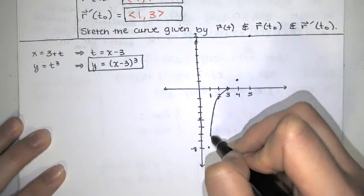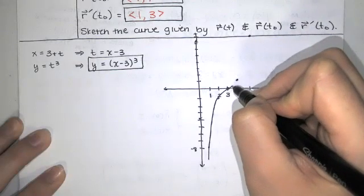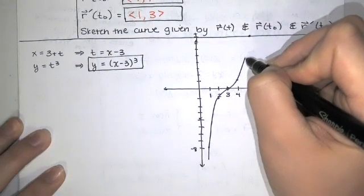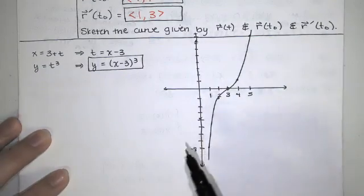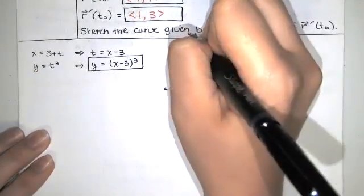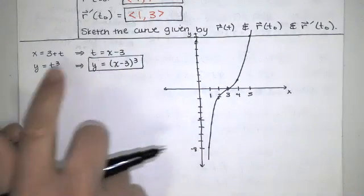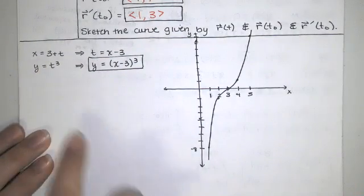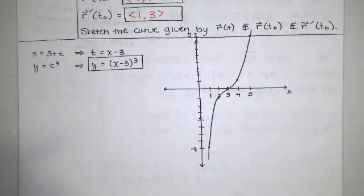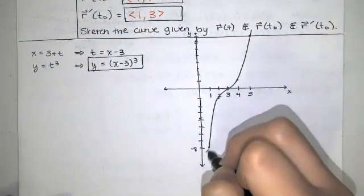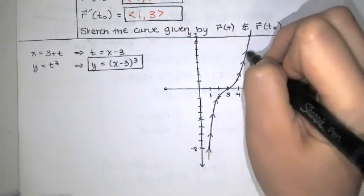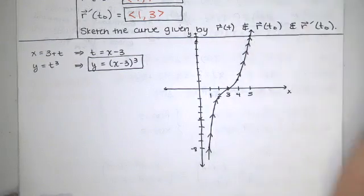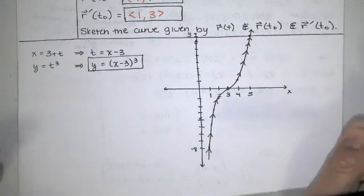So the path actually looks like this. Just a cubic function, just like you're used to from pre-calculus. But there's an orientation associated with this path. So as t increases, x increases, and y increases as well. So the orientation is this. We're going to go farther to the right, and we're going to go up as t increases.